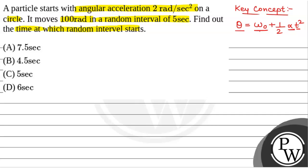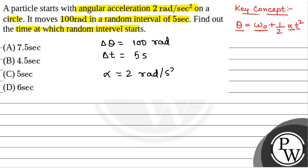We have been given that delta theta is 100 radians in an interval of delta t equal to 5 seconds. Alpha, the angular acceleration, is given as 2 radians per second squared. We will consider omega-naught, the initial angular velocity, to be equal to zero — so starting from rest.